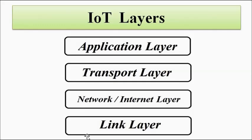So here we have discussed the various IoT communication layers in brief: the link layer, the network or internet layer, the transport layer, and the application layer. We will be discussing each of these in detail in upcoming videos. I hope you liked this video — please subscribe to Engineering Tutorial for more videos related to electrical, electronics, instrumentation, and communication engineering. Have a great day, thank you.